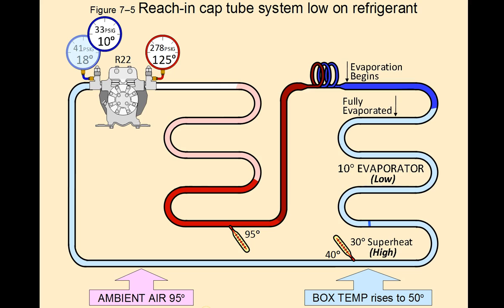On the high side also, let's take a look at this. The system is undercharged and evaporation begins normally at the beginning part of the evaporator coil. But because the system is undercharged, at this point all of the refrigerant has evaporated and has fully changed state into vapor. Through the entire remaining part of the evaporator coil, there is no significant cooling happening because there is no changing of state.